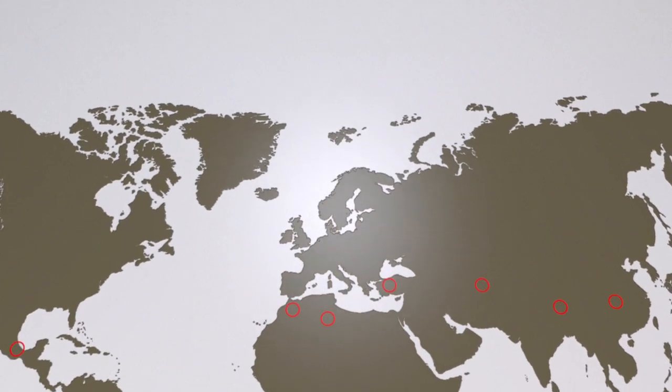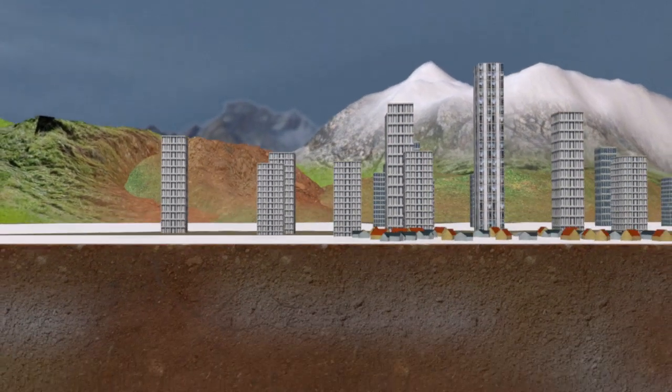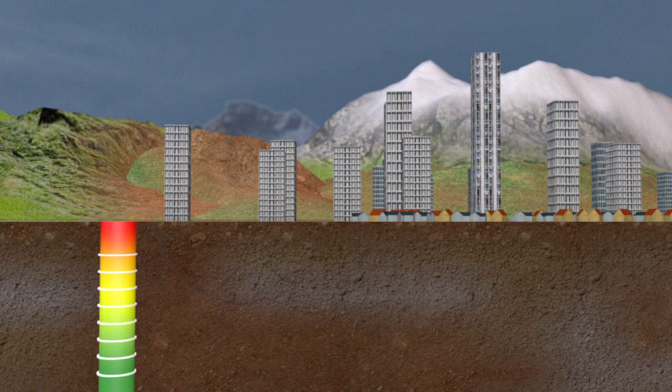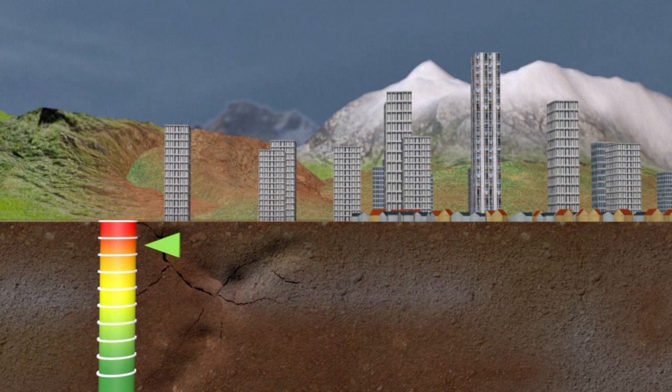The moment magnitude scale rates energy released during an earthquake. It was devised to measure large tremors more accurately than the older Richter scale. In theory, there's no limit, but never has an earthquake measured more than the 9.5 magnitude recorded in Chile in 1960.